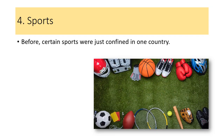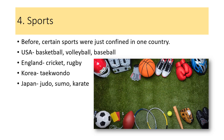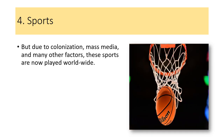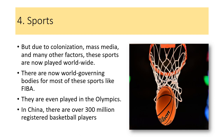When we talk about sports, certain sports were just confined in one country before. Basketball, football, volleyball, and baseball had their origins in the USA. In England, they had cricket and rugby. In Korea, they have taekwondo. In Japan, they have judo, sumo, and karate. While they have kung fu in China and sepak takraw in Malaysia. But due to colonization, mass media, and many other factors, these sports are now played worldwide. There are now world governing bodies for most of these sports, like FIBA, and they are even played in the Olympics. In China, there are over 300 million registered basketball players.